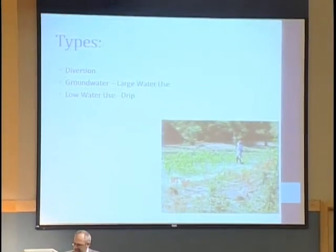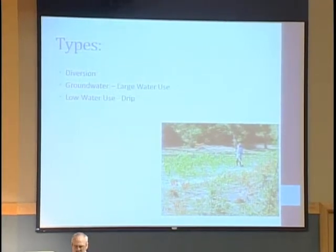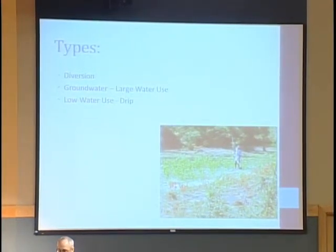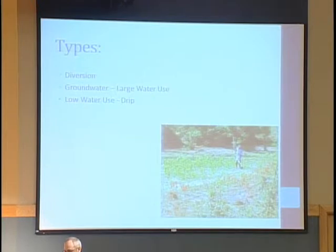I was asked to talk about water supplies specifically for irrigation in developing nations — this talk is for irrigation only, not drinking water. There are three types of irrigation we see in the developing world: diversion of stream flow, groundwater in a large water-use context, and low water-use contexts like drip irrigation.